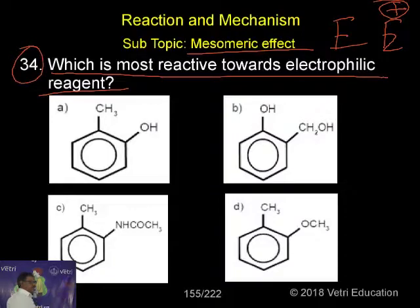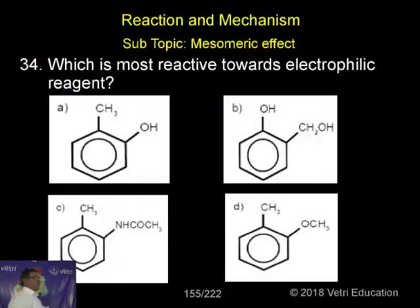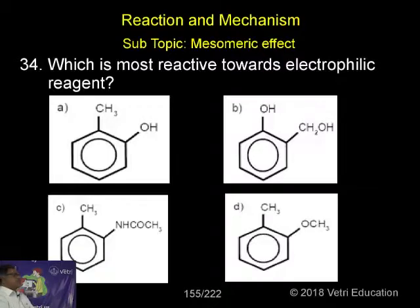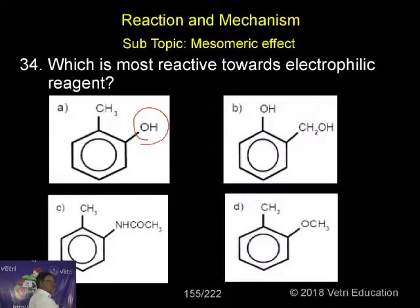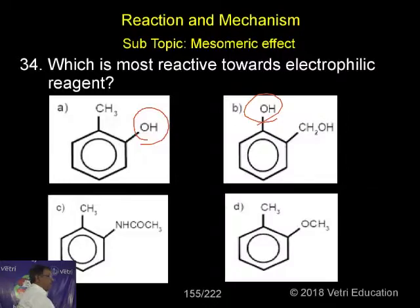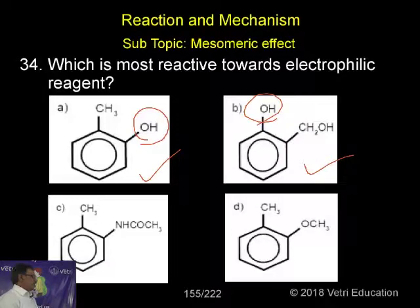Now, kindly look at this. Under priority number one — as you have seen already under the mesomeric +M effect — NH2 is greater than OH. Here, there is no NH2, so OH is number one. Here also, OH is present. Among the four options, where there is no OH and no NH2, we compare the groups CH2OH and CH3 to determine which will react towards the electrophile.